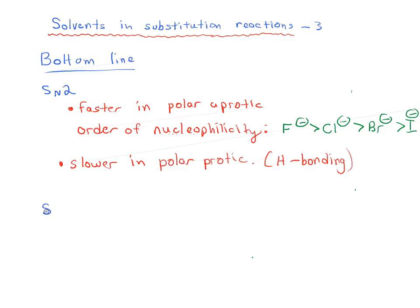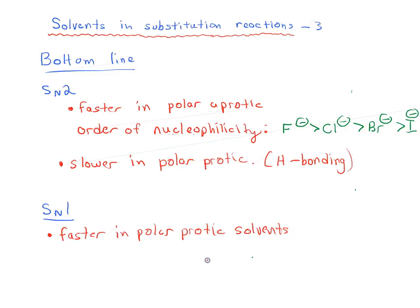What about SN1 reactions? As it turns out, they tend to be faster in polar protic solvents. Part of the reason is that polar protic solvents tend to be more polar overall than polar aprotic solvents. But hydrogen bonding is also important because the solvent can hydrogen bond with the leaving group.